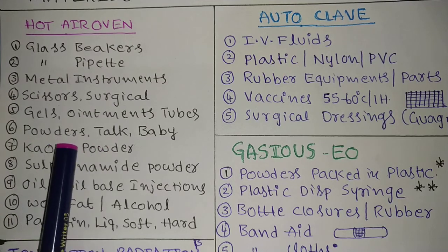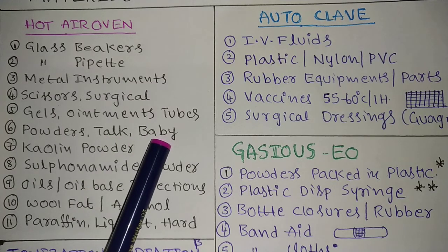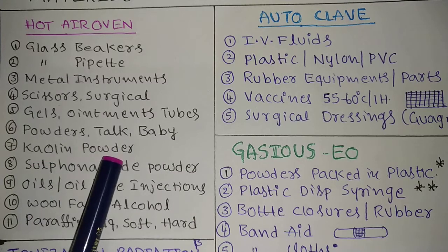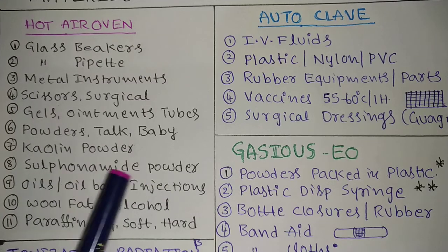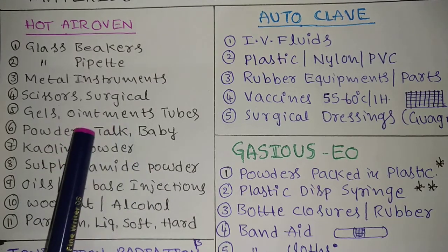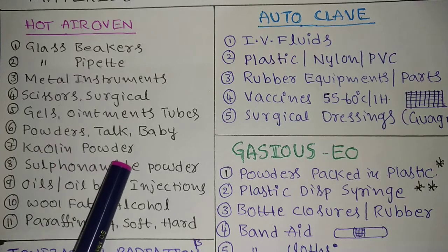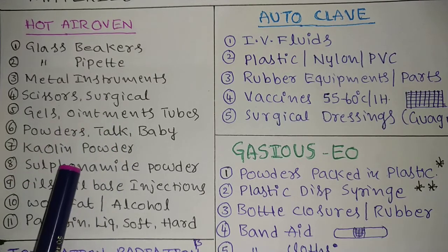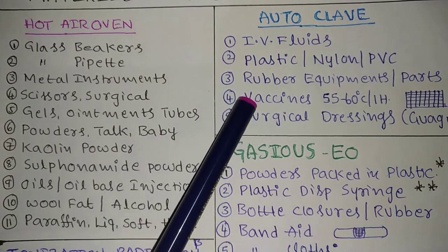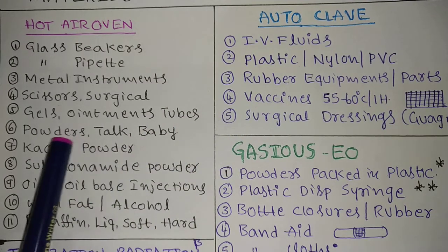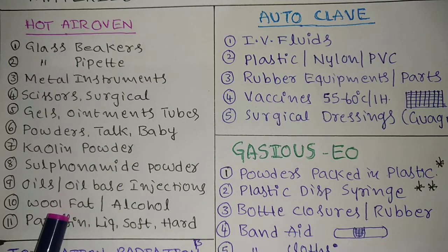Powders — the same applies. Powders like talc powder, baby Johnson powder, kaolin powder, and sulfonamide powders all use the hot air oven. These powder items have flow property and can be used as glidants. If sterilized by autoclave, moisture absorption would cause them to lose their glidant property. That's why hot air oven is used for all powders.